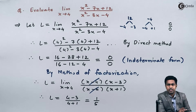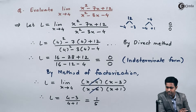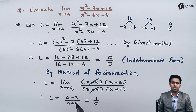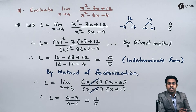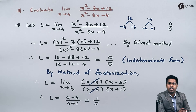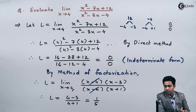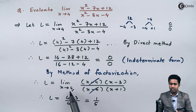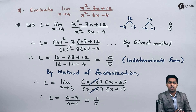If you observe the factor that we cancelled from the numerator and denominator, and the limit given, there is a certain relation present. The limit is x tends to 4, that is the number is 4, and the factor we cancelled is x minus 4. In the method of factorization, wherever we get the limit as a certain number, we will always find the opposite-sign factor in the given function, and it will always cancel. Since here we have plus 4 as the limit, we got the factor minus 4 which got cancelled. If next time we have minus 2 as the limit, the factor that cancels would be plus 2. So the answer is L equal to 1 upon 5.